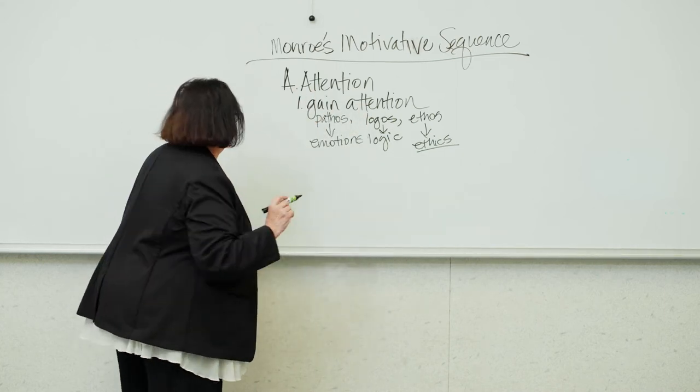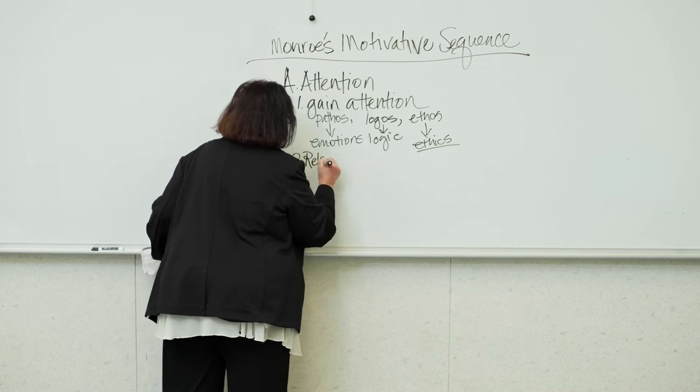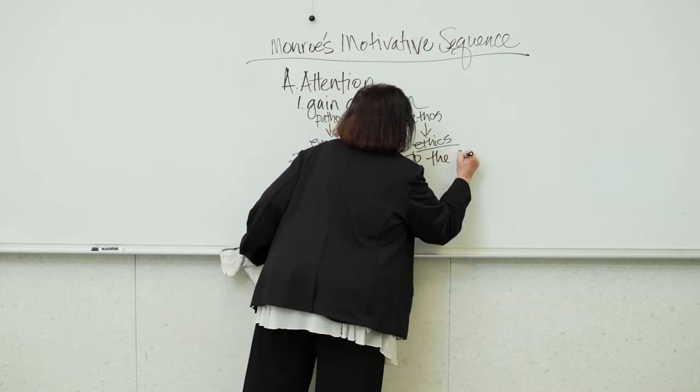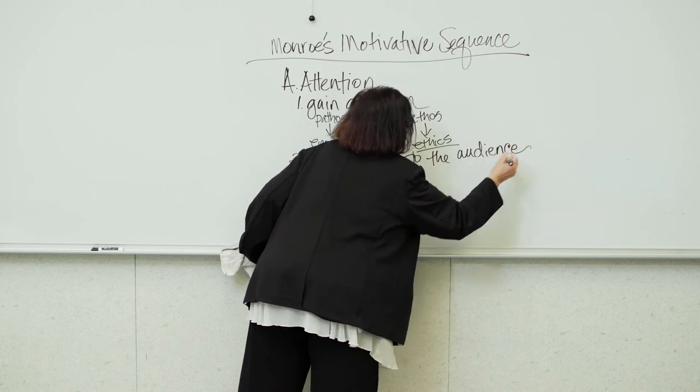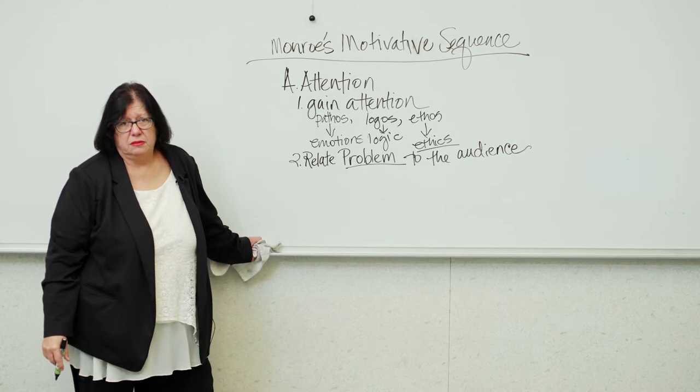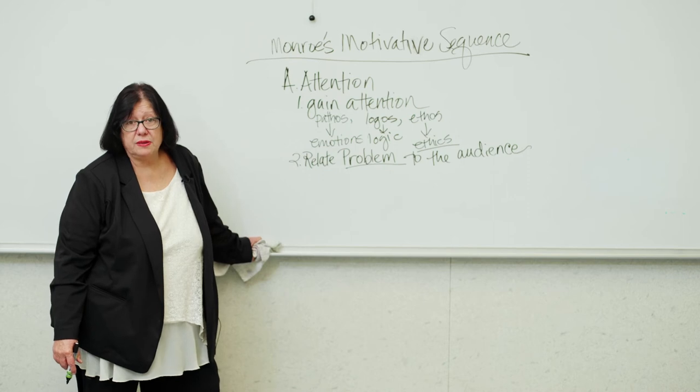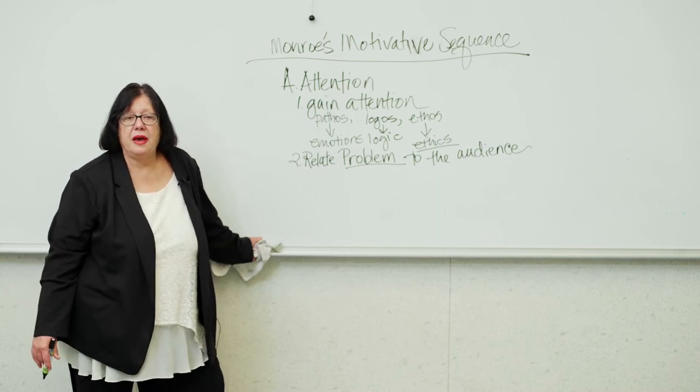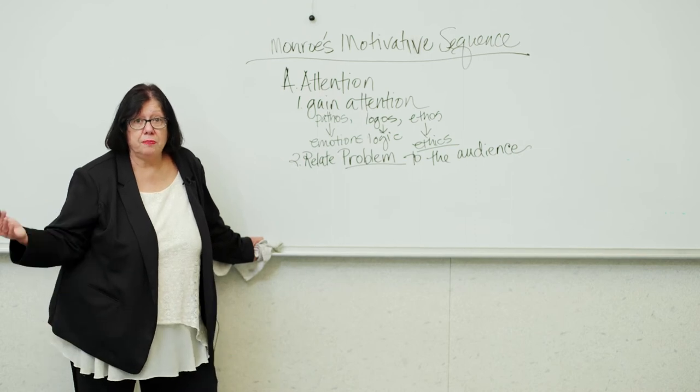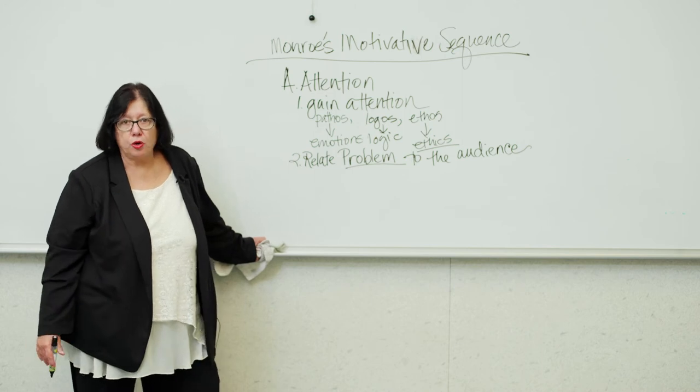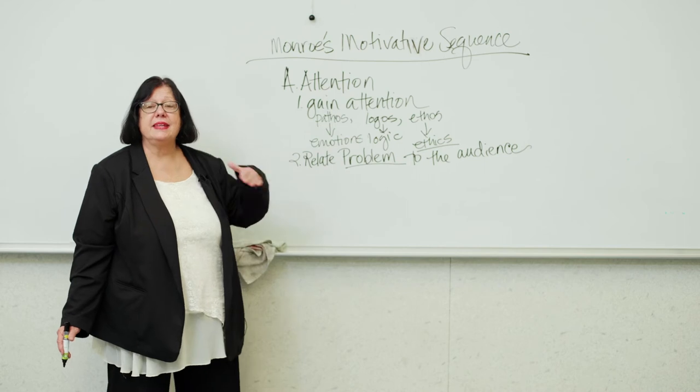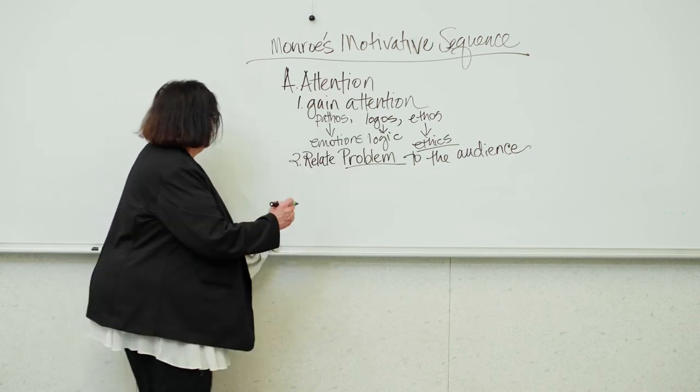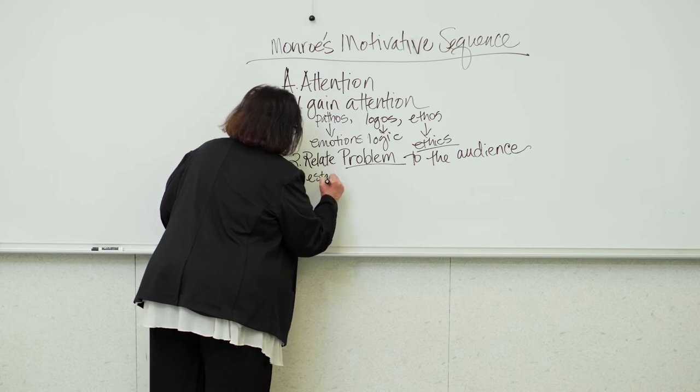All right. So all of that you want to do in your attention getter. The second thing you want to do is relate the problem to the audience. Well, I don't drink and drive. Why should I care? I never drink and drive. So I don't care about this topic. Well, you need to care because you could be on the other side. You could be the person that's killed. You could be the person that, who has a mother or a daughter or a father, you know, nobody can escape this problem. So that's what you want to do. You want to relate it to us and tell us that it's our problem and that we need to care about it. So you're going to relate the problem to the audience. And then the third one is, of course, establish the significance of the problem.